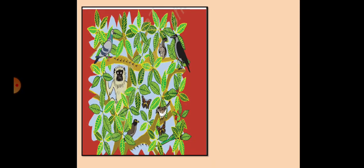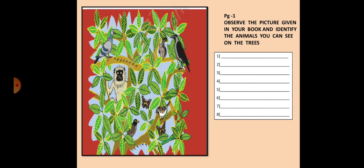Your book, the very first picture is this one. I have dealt with this picture in the first video. You have to observe the picture given in your book and identify the names of animals you can see on the trees. There are few animals on the trees which live on the trees. What are these animals called? They are called arboreal animals.